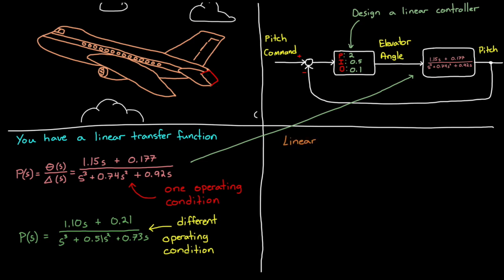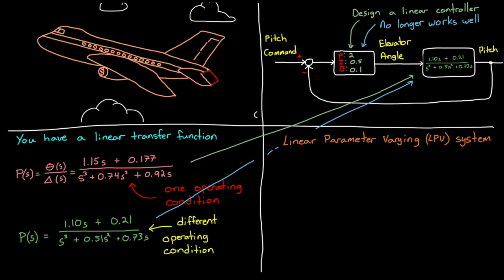This type of nonlinear system is called a linear parameter varying system, or LPV, where the model itself is linear, but the parameters change over time and over operating condition. So your linear controller that works so well with a single operating condition probably won't work very well at the other operating conditions with the different instances of the model. So what can we do?